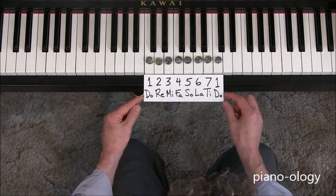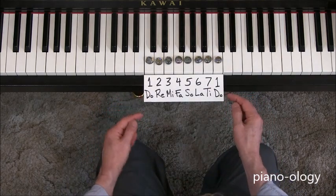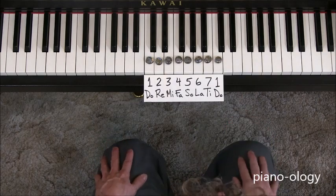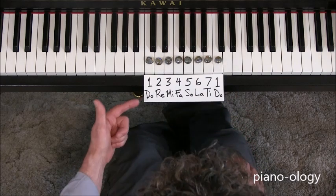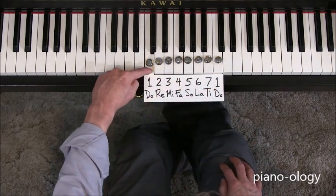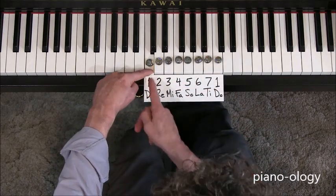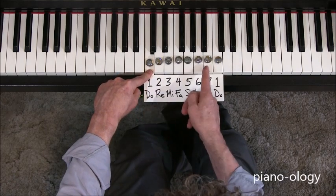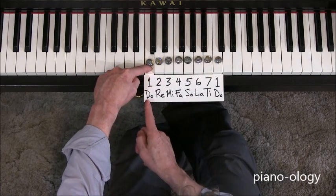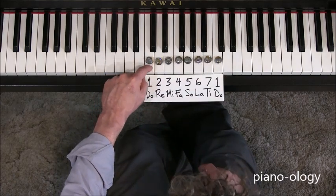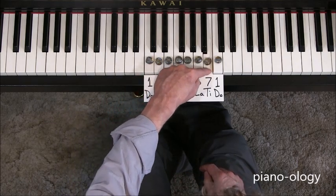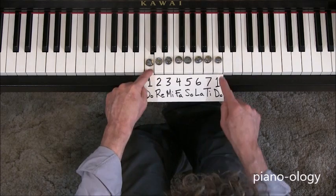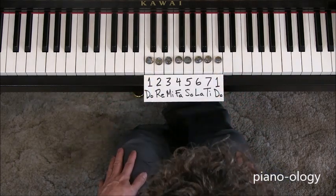Now in contrast, the solfege system assigns single syllable, one syllable names to each of the same notes. So let's do the same. Again, C is Do. It's the root of the scale, and it also defines the key center. Do, Re, Mi, Fa, Sol, La, Ti, and then Do.